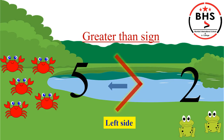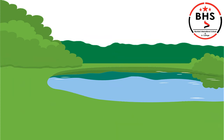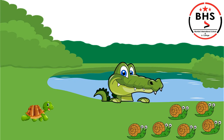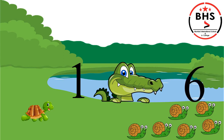Here, on the left hand side there is a tortoise, and on the right hand side there are snails. Let us count the tortoise: 1. There is 1 tortoise. Now let us count the snails: 1, 2, 3, 4, 5, 6. There are 6 snails.